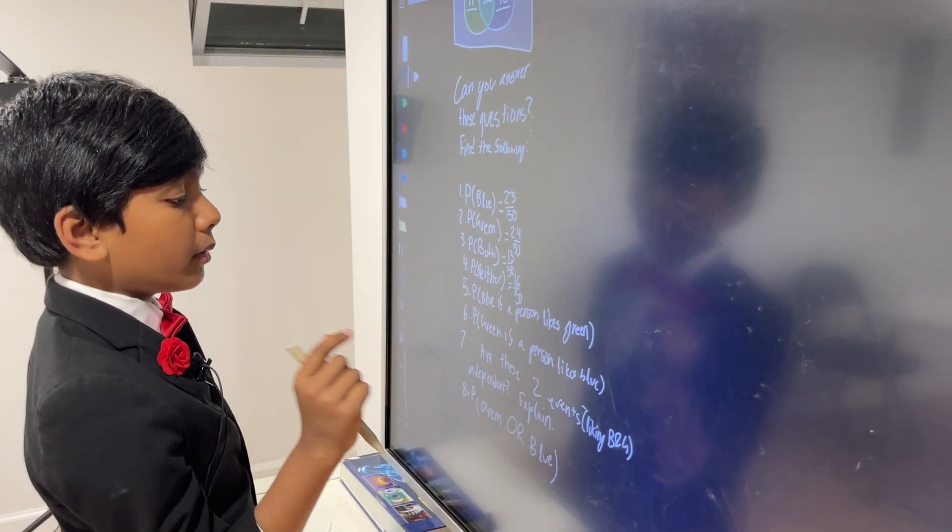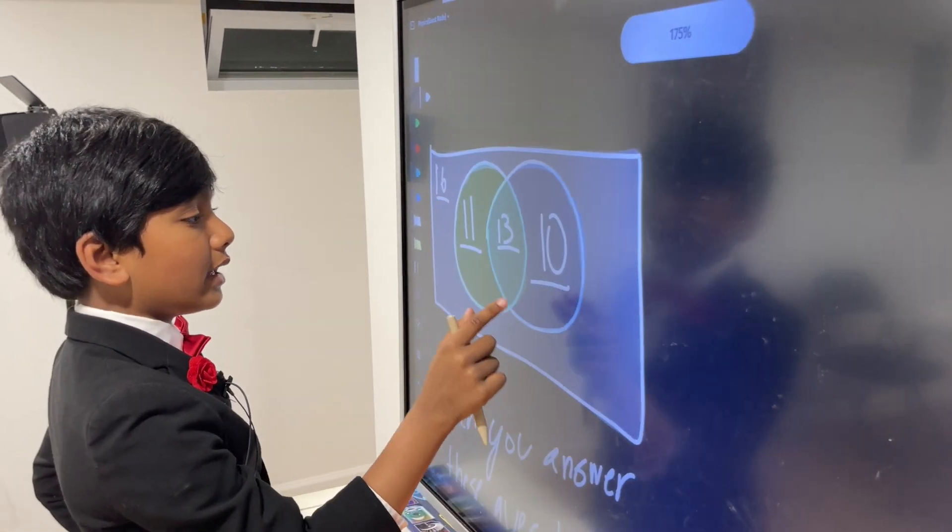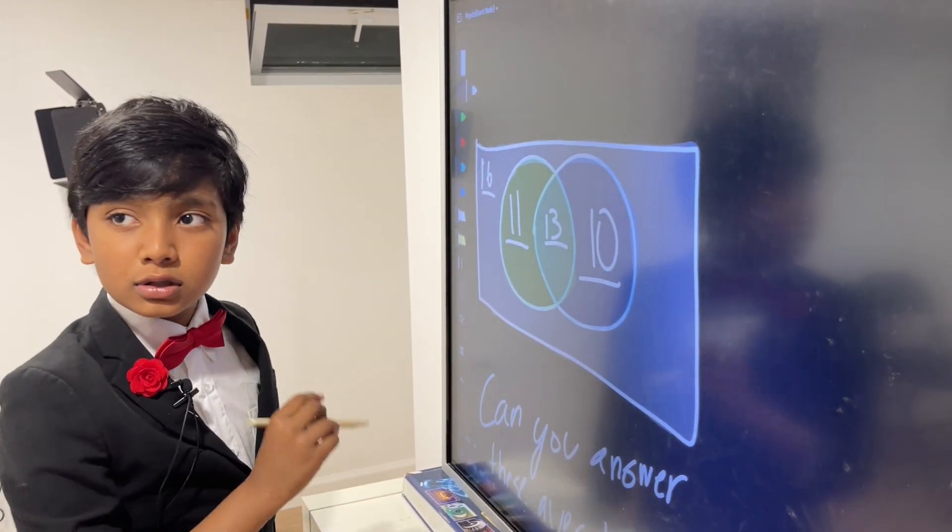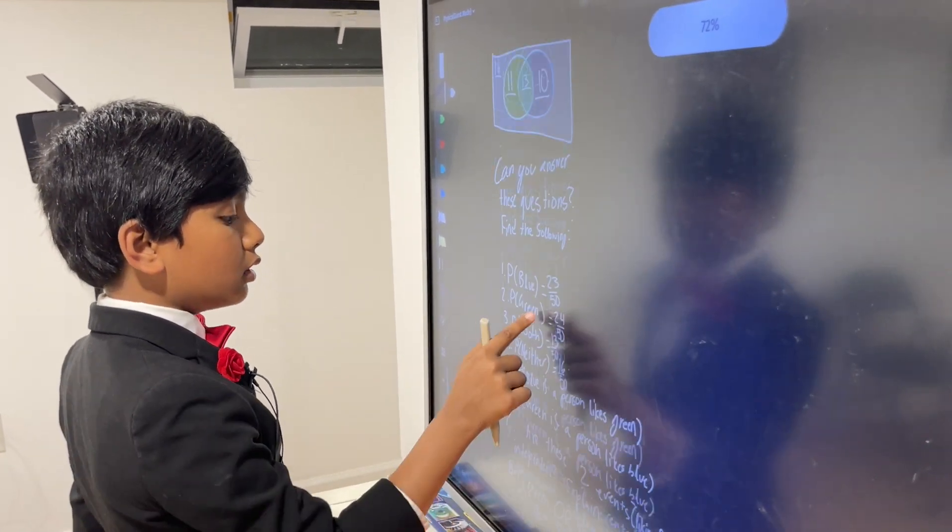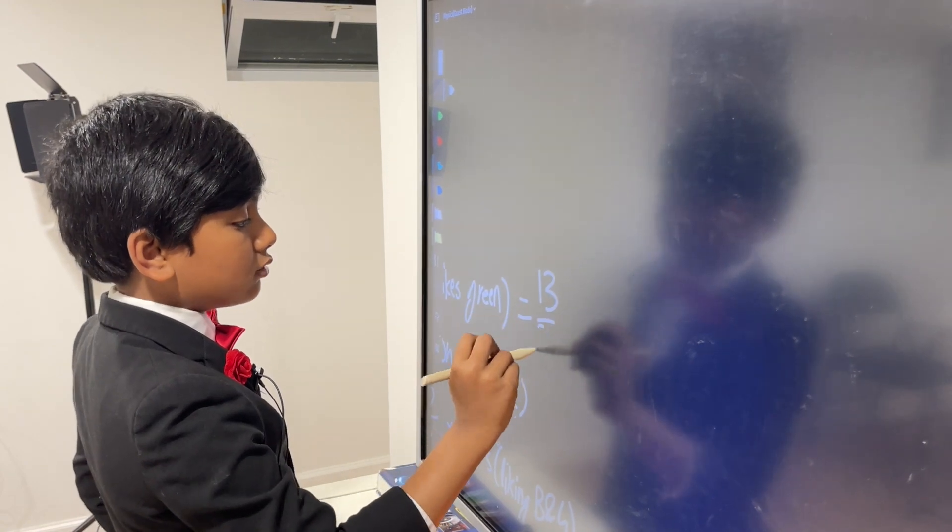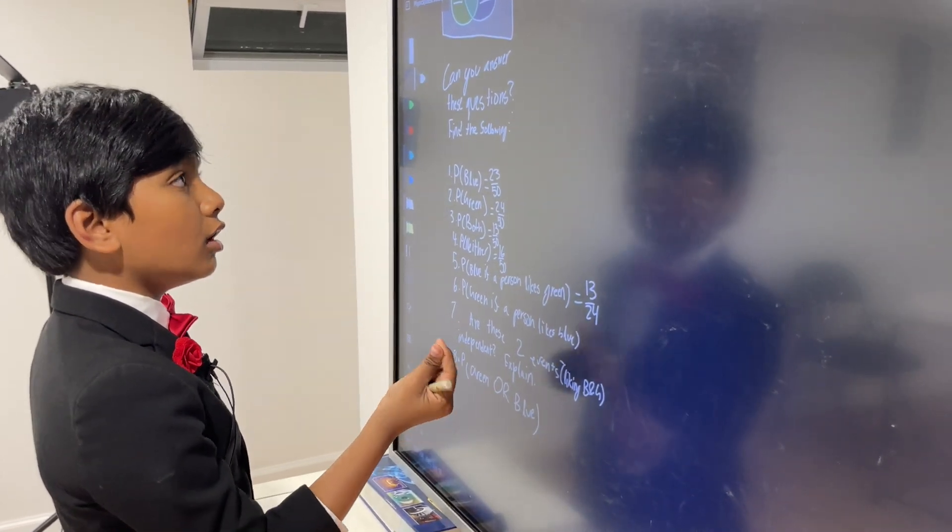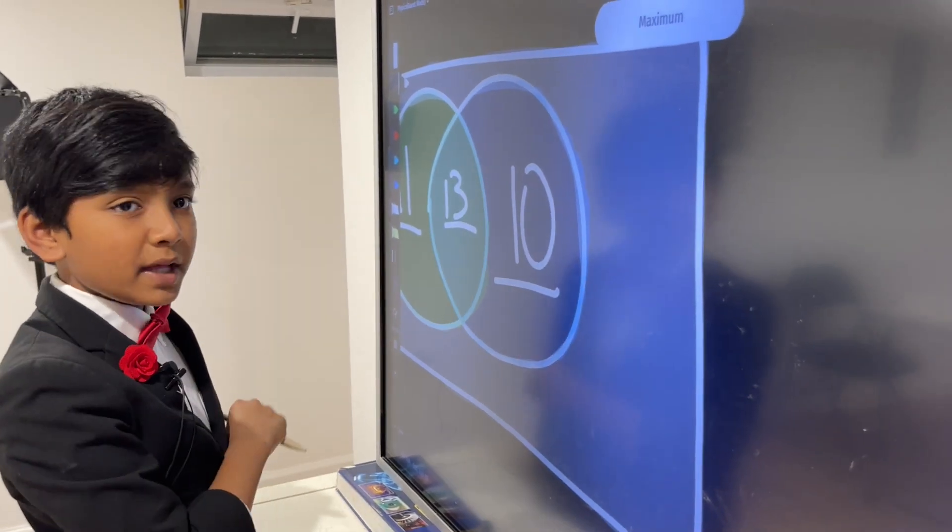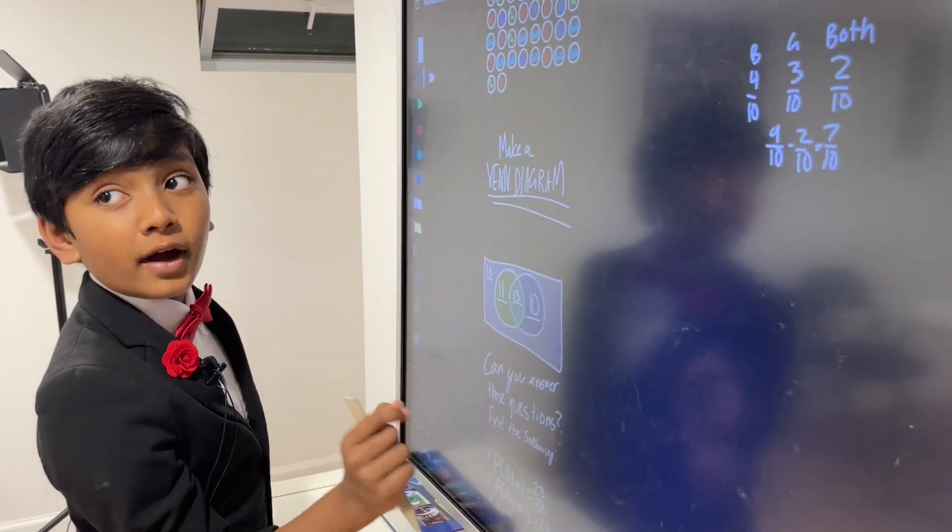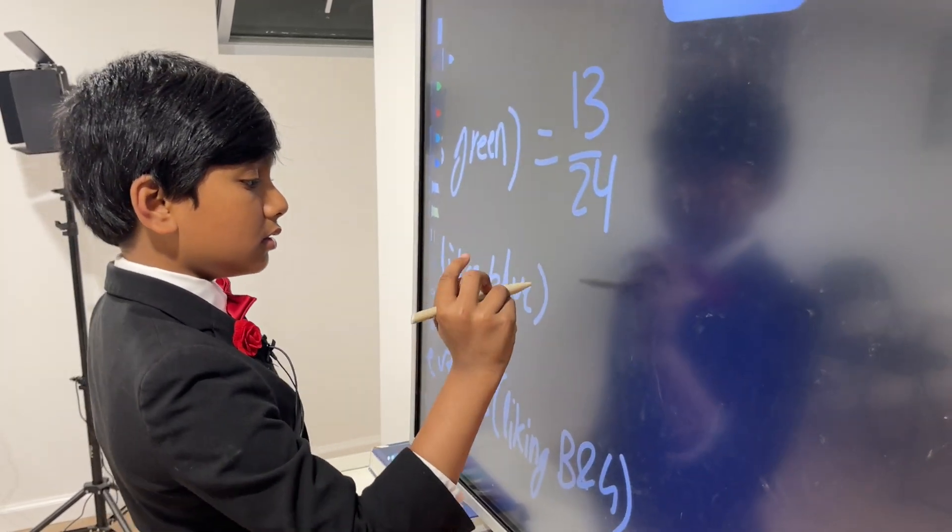Five, the probability of a person liking blue if a person likes green. So, what would that mean? Well, there are eleven people who just like green individually. There are thirteen people who like green with blue. There are twenty-four people overall who like green. So, that means that this would be thirteen out of twenty-four. So, now, what about green if a person likes blue? Well, of course, again, that would be the amount of people who like both divided by the amount of people who like blue exclusively plus the people who like both. So, thirteen out of twenty-three.